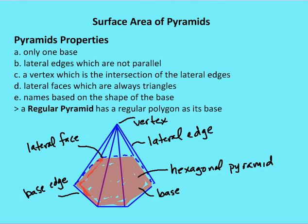Then we have lateral edges, which are not parallel — in the case of the prism, we had lateral edges which were parallel. So only one base, lateral edges which are not parallel. A vertex, which is the intersection of the lateral edges. Lateral faces, which are always triangles. In a regular pyramid, we have triangles which are congruent, but if we don't have a regular pyramid, then we have triangles which are not going to be congruent.